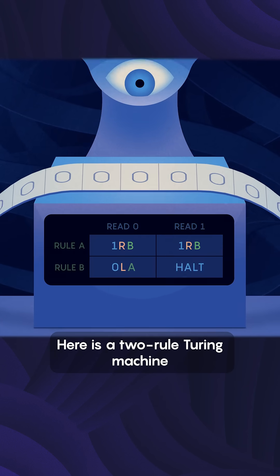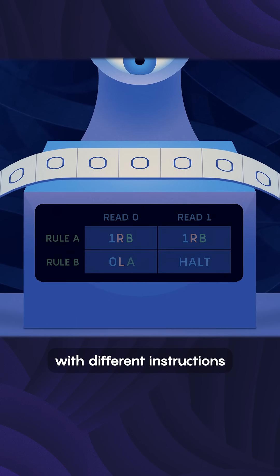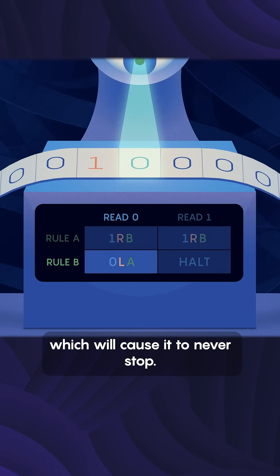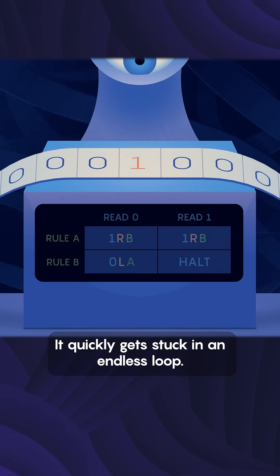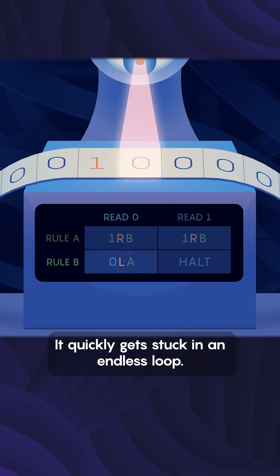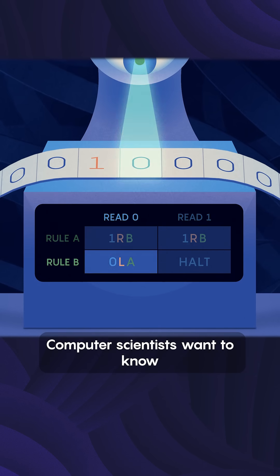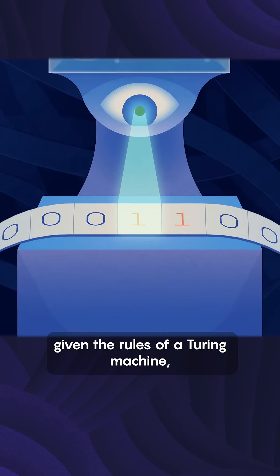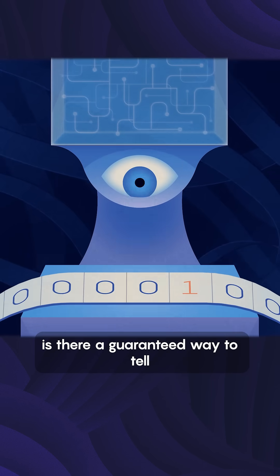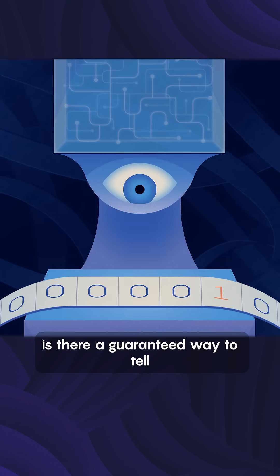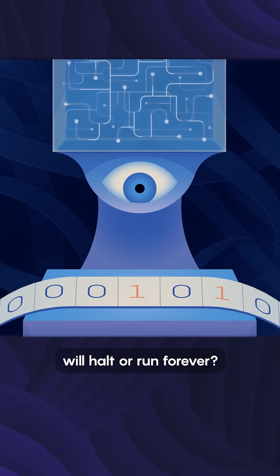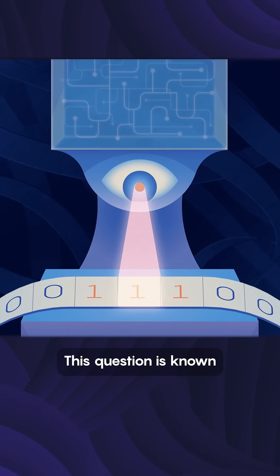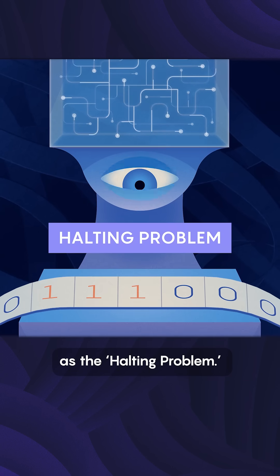Here is a two-rule Turing machine with different instructions, which will cause it to never stop. It quickly gets stuck in an endless loop. Computer scientists want to know: given the rules of a Turing machine, is there a guaranteed way to tell whether that machine will halt or run forever? This question is known as the halting problem.